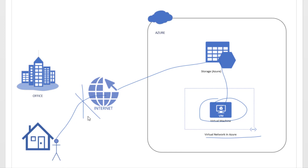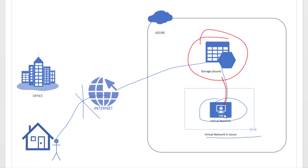That is what we are configuring. We are configuring the firewall on this particular storage account, and that firewall will say: give access only to this virtual network and do not give access anywhere else.